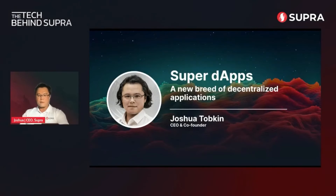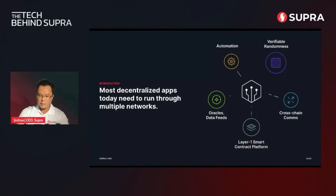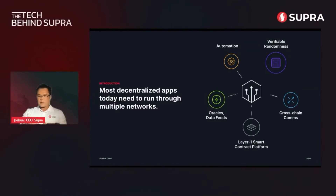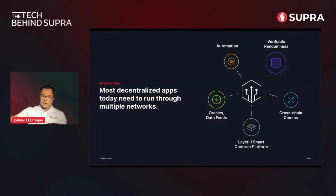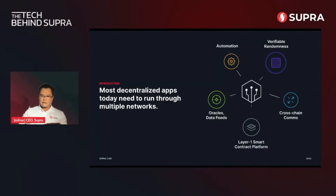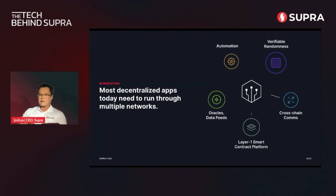A super dApp is more than just your good old dApp. Let's talk about where we're at today. If you need cross-chain communication, Oracle price feeds, automation, or verifiable random functions, generally these are separate protocols, separate projects, separate networks that provide these different things. And therefore, if you utilize those services, your smart contract platform is as secure as the weakest link in that design.